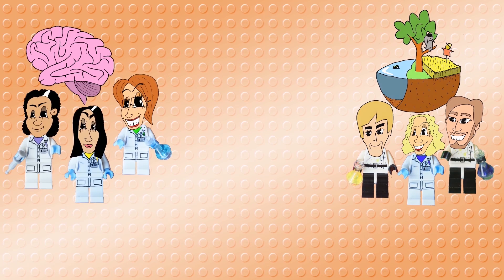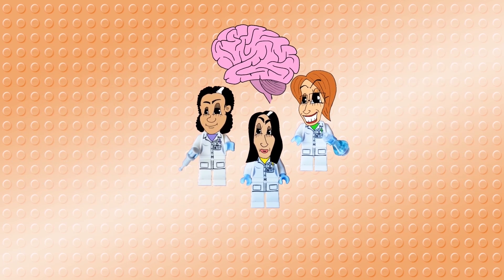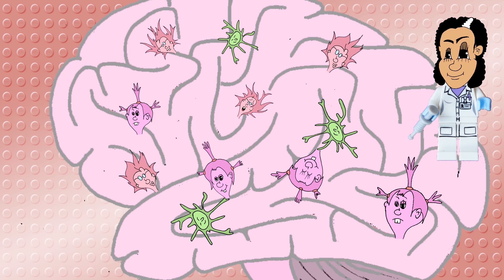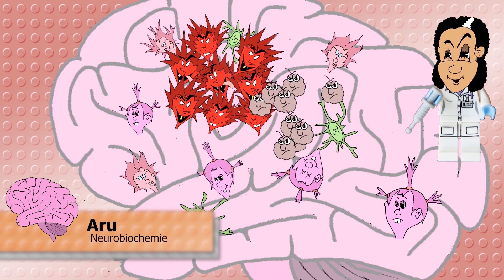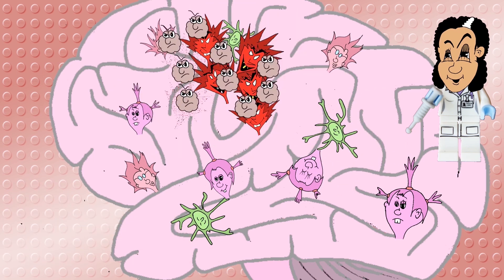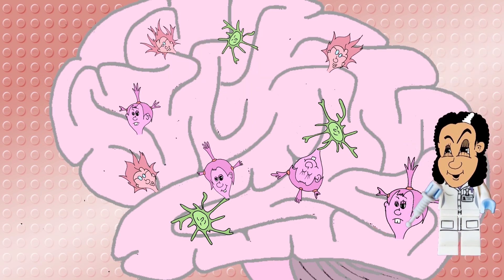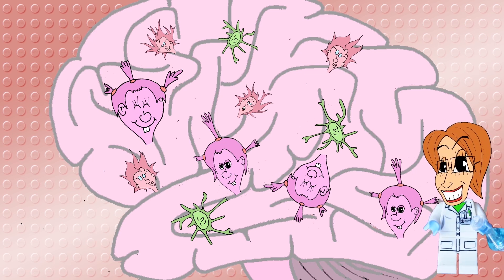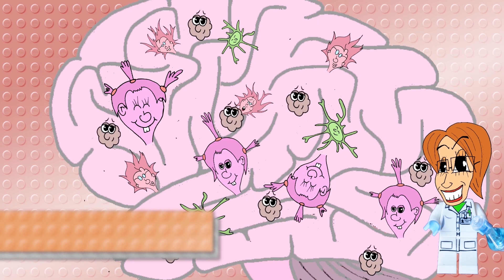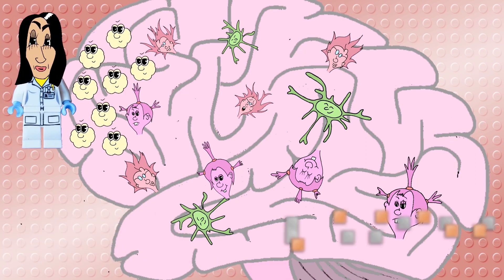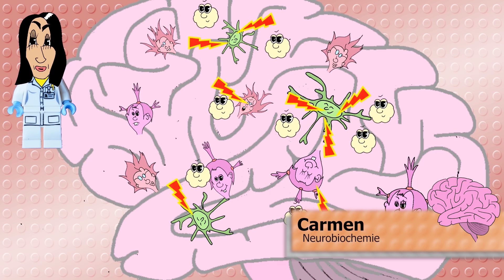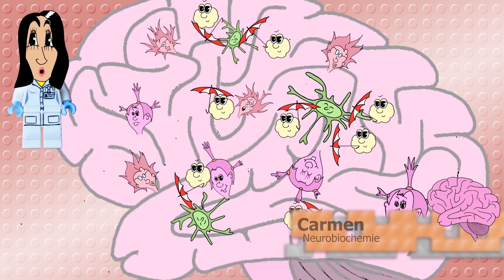Soviel zur Umwelt. Aber was passiert, wenn Nanopartikel ins Gehirn gelangen? Ein klarer Fall für Team 2. Wieso denn im Gehirn? Wie sollen Nanopartikel denn dahin gelangen? Eine Möglichkeit: Kupferoxid-Nanopartikel könnten zur Bekämpfung von Gehirntumoren in der Medizin eingesetzt werden. ARU untersucht, ob sie Tumorzellen zerstören können. Aber was passiert mit den gesunden Gehirnzellen, wie zum Beispiel Neuronen, wenn sie mit Kupferoxid-Nanopartikeln in Kontakt kommen? Damit beschäftigt sich Katrin. Carmen erforscht, ob Zeroxid-Nanopartikel nicht nur unschädlich für Gehirnzellen sind, sondern diese auch schützen können.